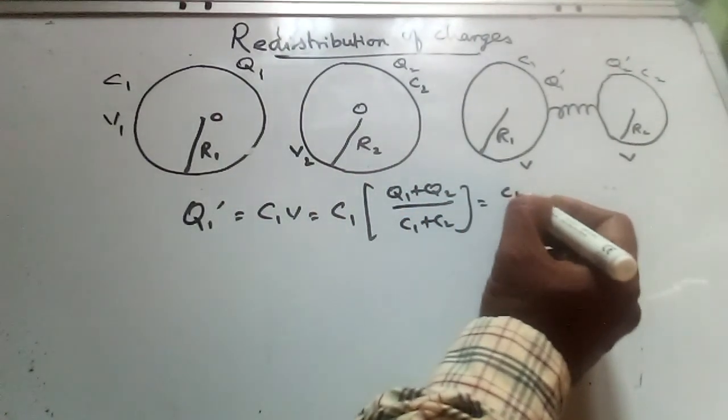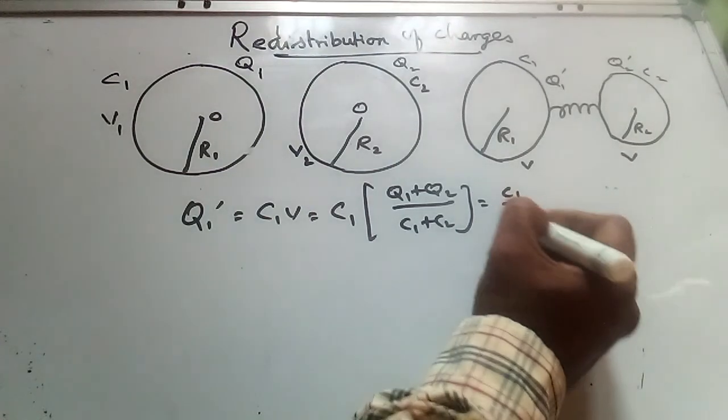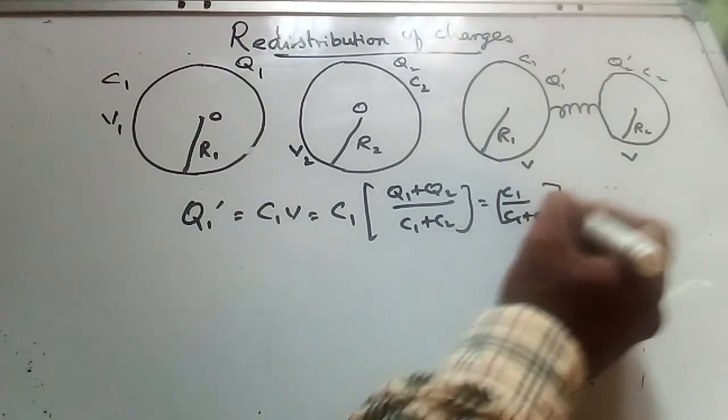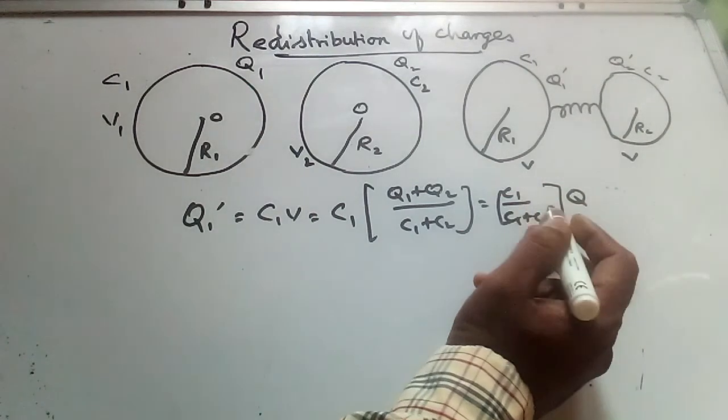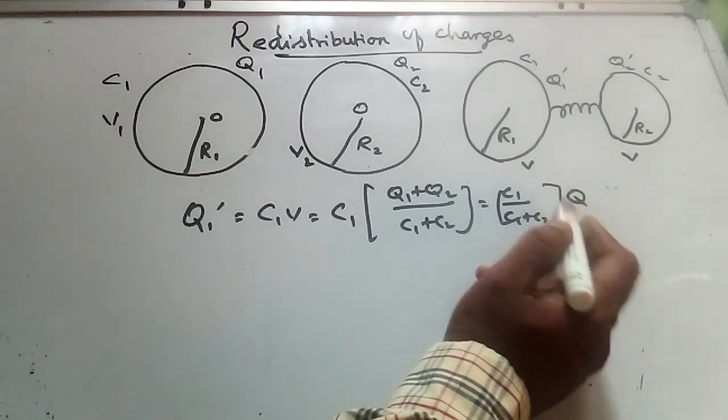So C1 by C1 plus C2 into Q. Now Q equal to Q1 plus Q2, that is the total charge on the system.